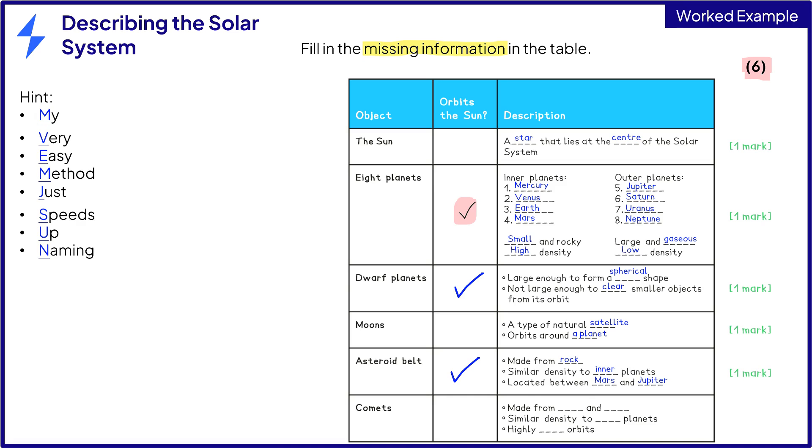Comets also orbit the sun. They are made from ice and dust, so they have a similar density to the outer planets. They have highly elliptical orbits. In this example, you would get a mark for each correct row. This means if you got even one piece of information wrong, you would not get the mark for that entire row.